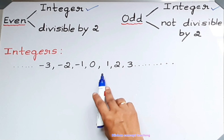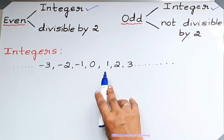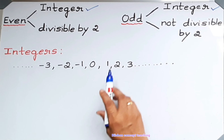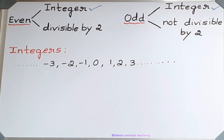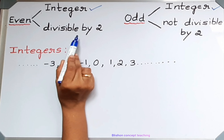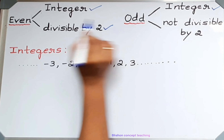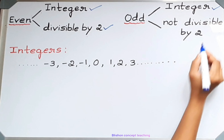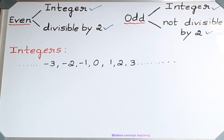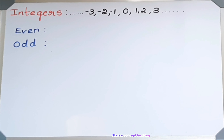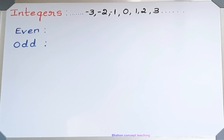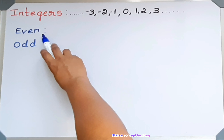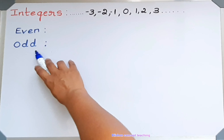It means these numbers either must be even or must be odd. The second condition is: if a number is divisible by 2 it is even, and if it is not divisible by 2 then it is odd. Now let's divide all these integers by 2 and find out which numbers are even and which numbers are odd.